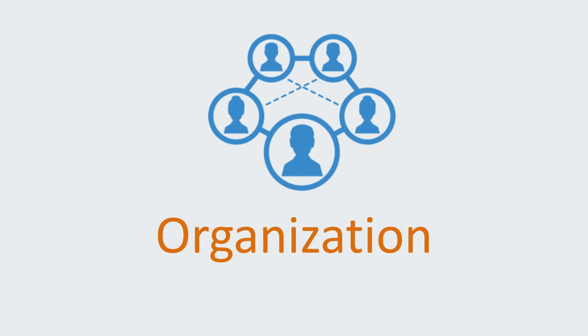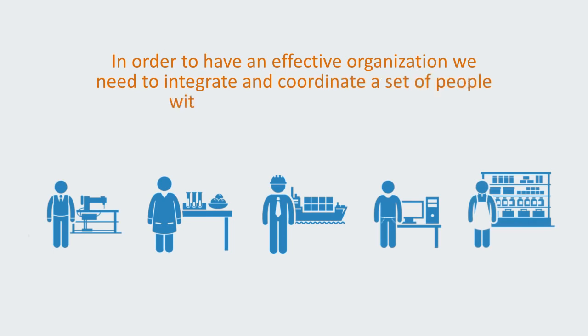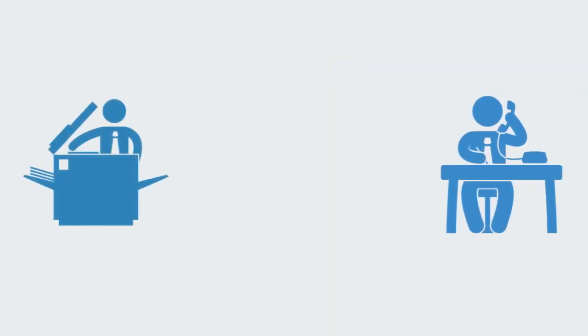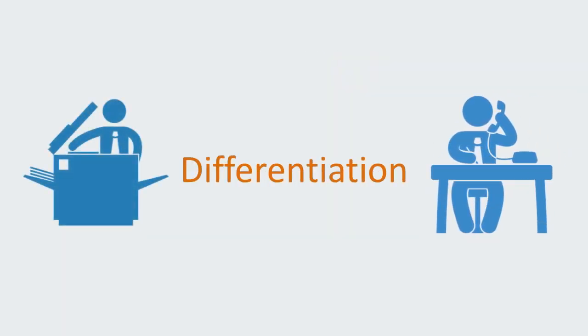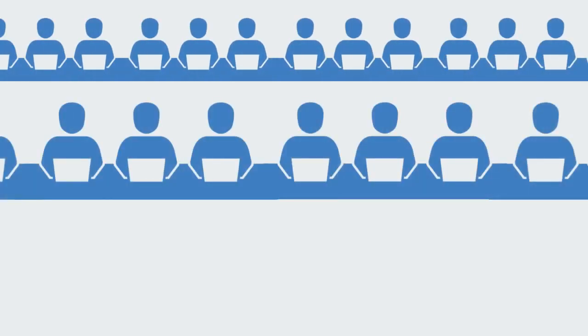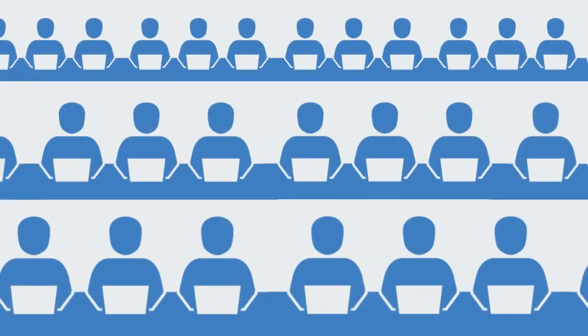Next, the process of management involves the organizing of people into a functional unit. In order to have an effective organization, we need to integrate and coordinate a set of people with different capabilities. Both of these terms — integration and differentiation — are important. Integration means they are working together. Differentiation means they are doing different things. Without either of these, we don't really have an organization. If everyone performs different functions but they are not coordinated, we don't have an organization. Likewise, if everyone performs exactly the same function, again, we don't really have an organization.